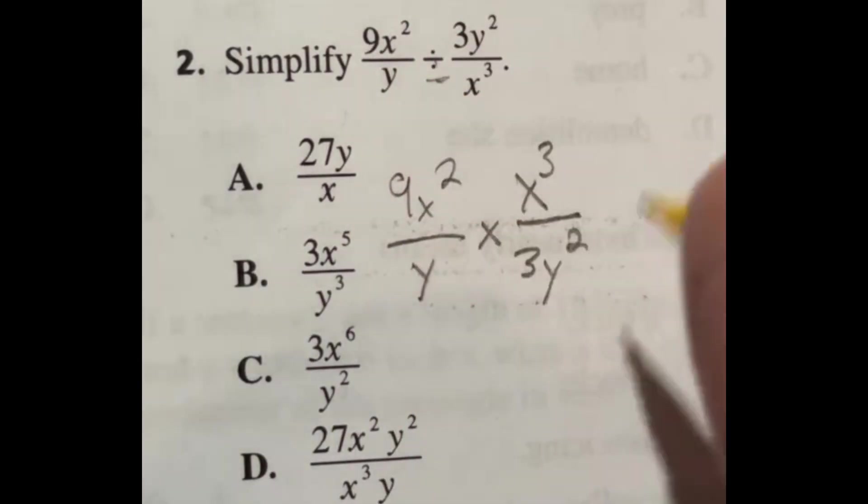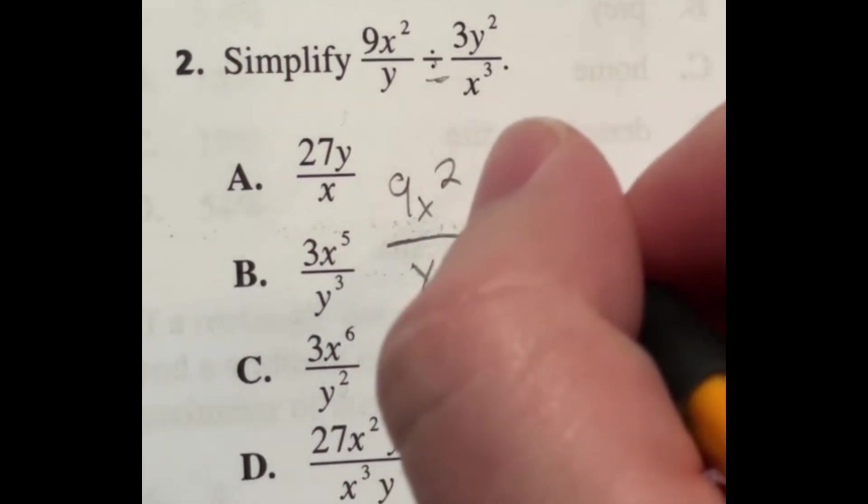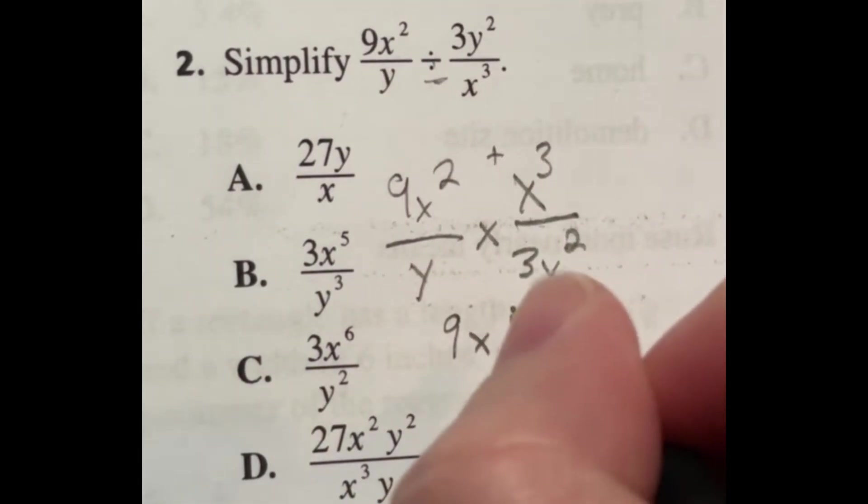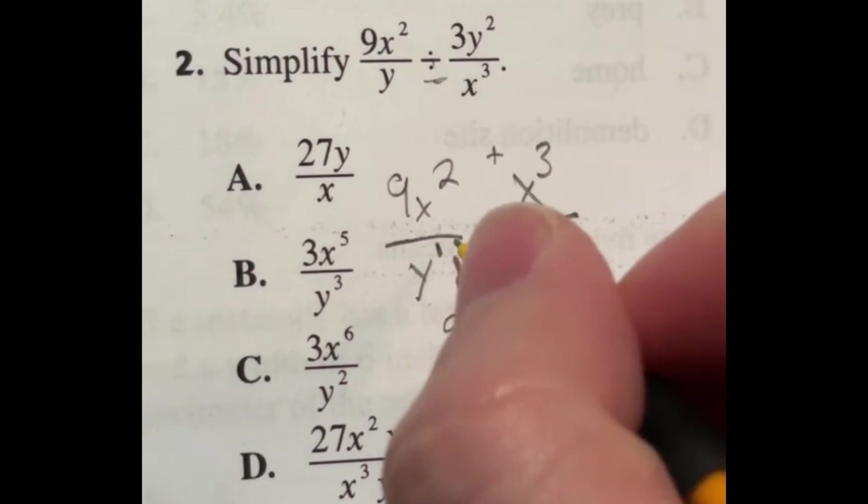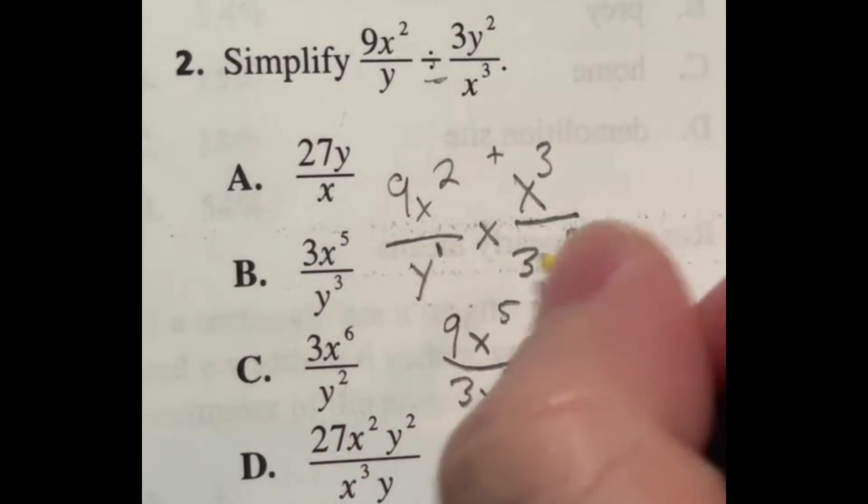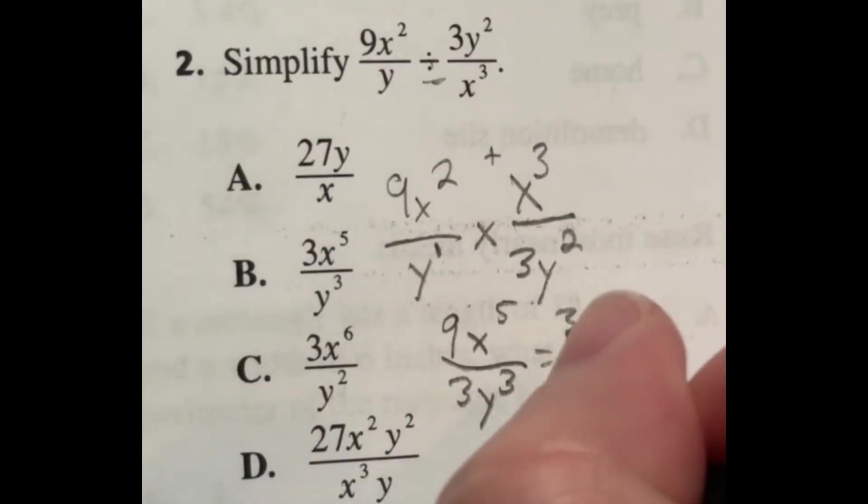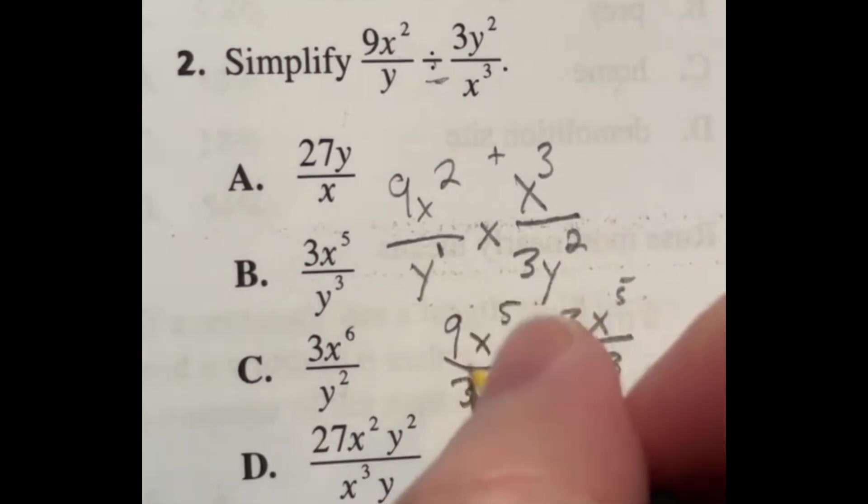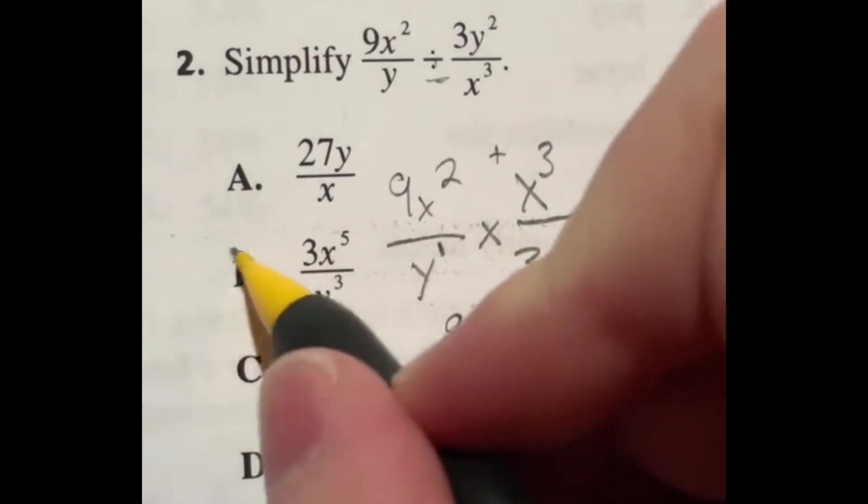just like exponent rules that we looked at yesterday, if you are multiplying two numbers with the same base and different exponents, you can just add their exponents together. So we're going to have 9 times x to the 5th on top. And then on bottom, we got technically y to the 1. So again, we're just going to do 1 plus that 2 to give me 3y to the 3rd power, because we're multiplying again. With that said, 9 divided by 3 is just 3. So we're going to end up getting a final answer of 3x to the 5th over y to the 3rd. So if I'm looking at my answers here, that looks like that is answer B.